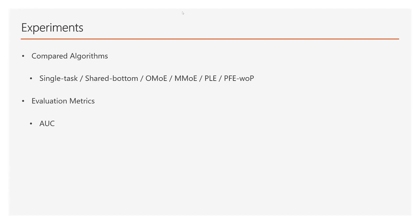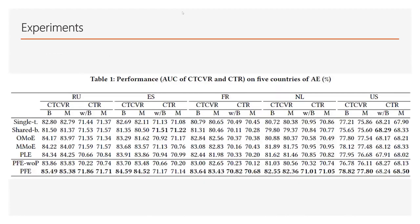We take AUC score as our evaluation metric. For task 1, we report the best AUC and the mean AUC on all experiments for comparison. For task 2, we report the AUC score when task 1 performs the best and the mean AUC score for all experiments. Here are the experimental results for the AliExpress dataset. Each country is regarded as an independent experiment. In all five countries, our PFE achieves the highest AUC among all compared methods in terms of best AUC and mean AUC.